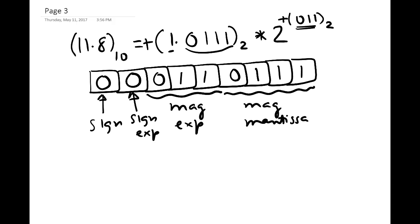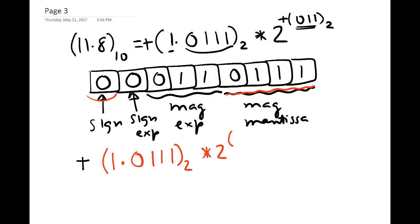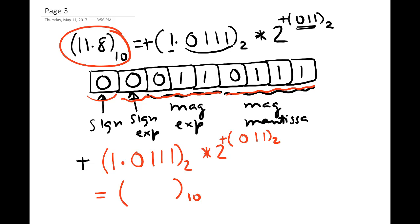Now if somebody gave you this representation and asked how you'd write it in base 2, you would say: it is positive because the sign bit is 0, then write 1. followed by the 4 mantissa digits 0111 base 2, times 2 to the power of the 3-bit exponent magnitude 011 base 2, with a positive exponent sign. Go ahead and evaluate this in base 10 and you'll see it is not exactly equal to 11.8 base 10. That difference is the roundoff error caused by using this hypothetical 9-bit floating point representation.